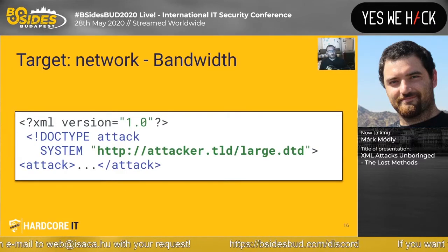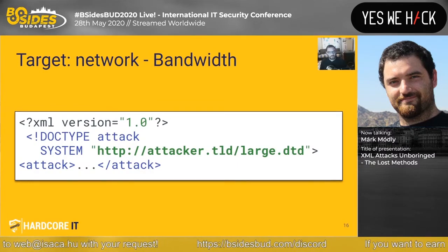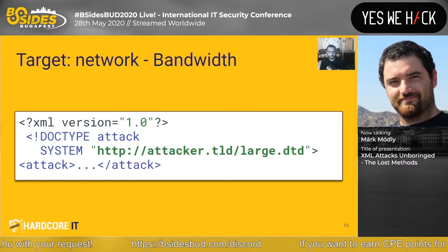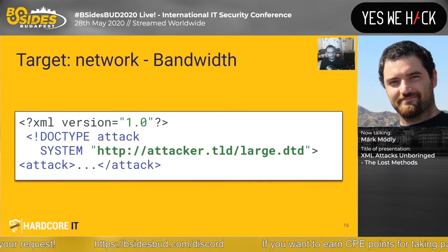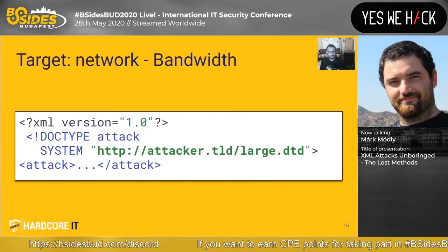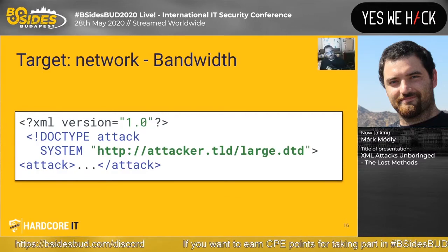We really need to speak a word about network attacks. Most parsers are not using MIME header checking, so we are able to refer to almost any kind of file to be downloaded as a DTD document. If we think about it, basically an attacker could start to download four or five Ubuntu ISO images as DTD, and that would have quite an impact on application or network performance. But we really need to get to something that could be utilized during a bug bounty session, so I think we should speak about XML fragment injection.